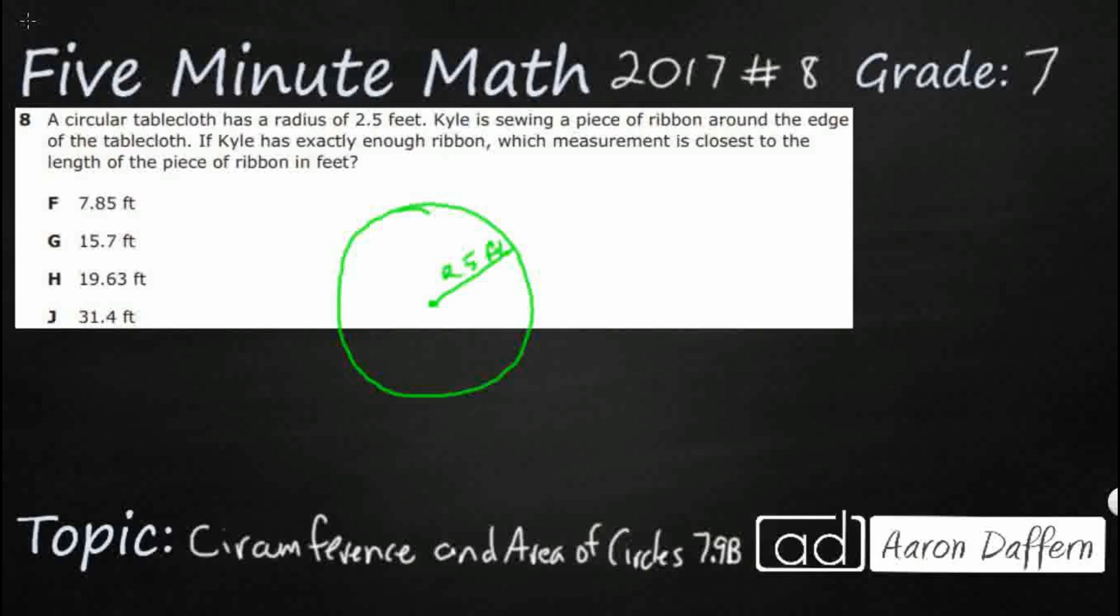Kyle is sewing a piece of ribbon around the edge of the tablecloth. He's going to be sewing something right around here. If he has exactly enough ribbon, which measurement is closest to the length of the piece of ribbon in feet? So we need to find this measurement right here, but they don't tell us what it is. They don't give us the word, but we can visualize it here.